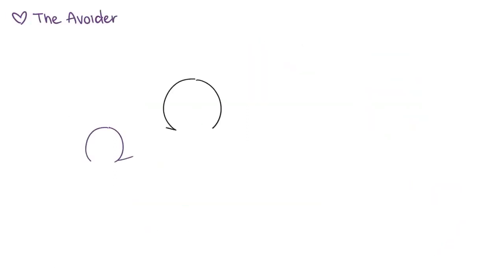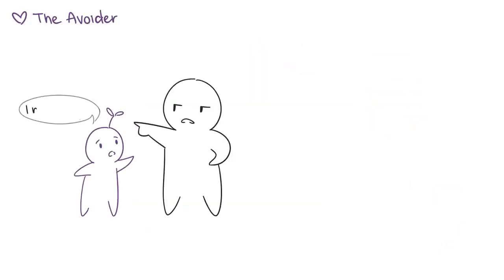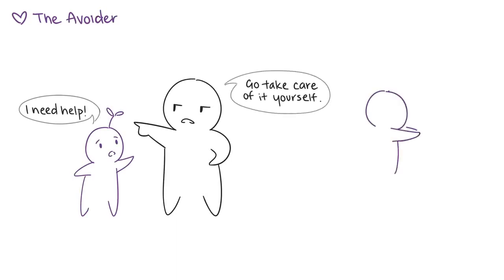5. The avoider. The avoider often grows up in a less affectionate home that values independence and self-reliance. As children, avoiders learn to take care of themselves starting at a very young age and put their feelings and needs on hold to deal with their anxieties of having little to no comfort from their parents.